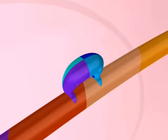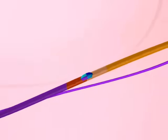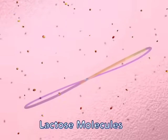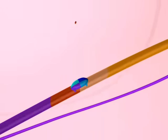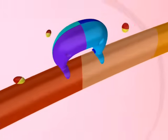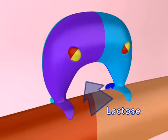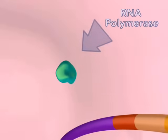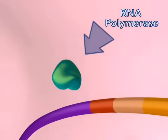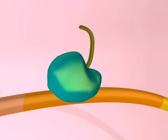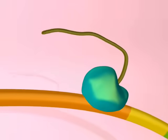Lactose is the lac operon inducer molecule. After first appearing in the cellular environment, lactose passively enters the E. coli cell and binds to the repressor molecule. This binding releases the repressor from the controlling region. At this point, RNA polymerase can begin transcription of the operon.